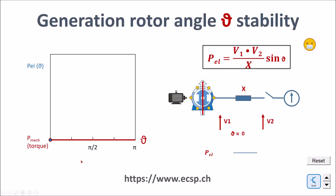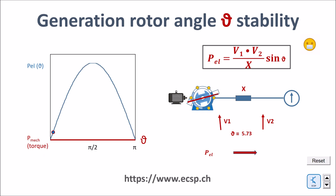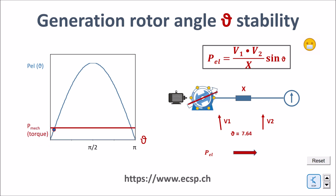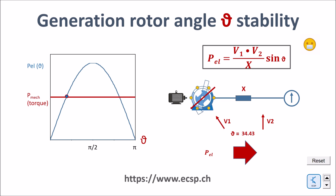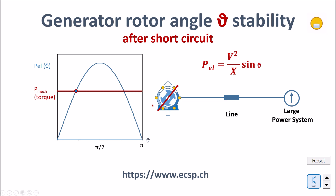Let me quickly reverse the process of synchronizing the generator to the grid, closing the breaker, and then slowly starting to push real power into the network. We are in the process of synchronizing, then we close the breaker, there is an oscillation, and then slowly we increase the mechanical power. The torque increases, and by doing so we increase theta, and by doing so we increase the real power fed from the generator to the grid. From now on I will show only the rotor angle, not the rotation animation.